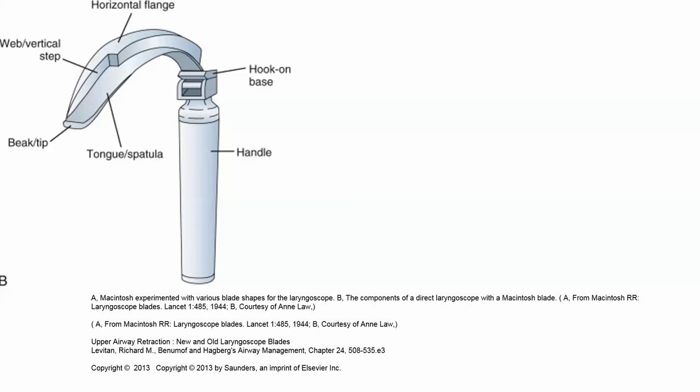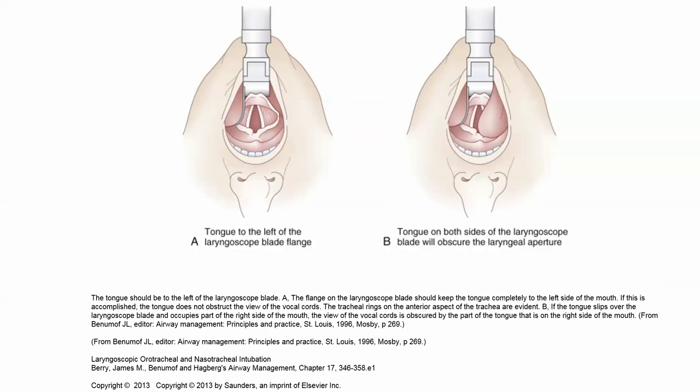The standard laryngoscope has parts: a handle, a hook-on base, and a spatula or tongue on the blade. This design is for function. A cartoon shows how a Macintosh blade inserted in the mouth, with the tongue to the left of the blade flange, gives a clear view of the glottis. Incorrect use of the laryngoscope blade results in a poor view of the laryngeal aperture.